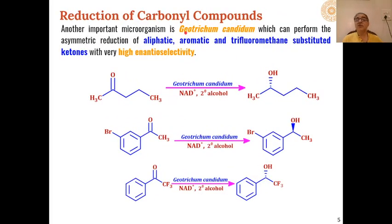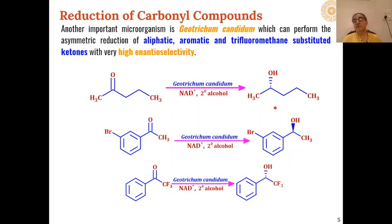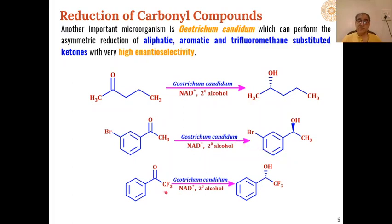Similarly, Geotrichum candidum microorganism is also used in the presence of NAD+ as the cofactor, with secondary alcohols as the solvent, for the reduction of different types of aliphatic or aromatic ketones. We will get an enantioselective reduction of the ketone to give alpha-hydroxyl compounds where the hydroxyl group is alpha. Whereas in acetophenone derivatives, the product is again enantioselective — only this enantiomer is formed. When the methyl group of acetophenone is replaced by a trifluoromethyl group, we get the opposite configuration in the reduction of the hydroxyl group.